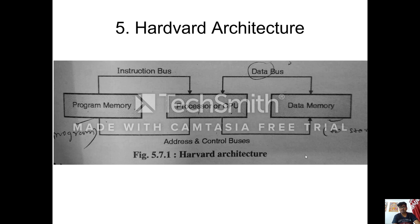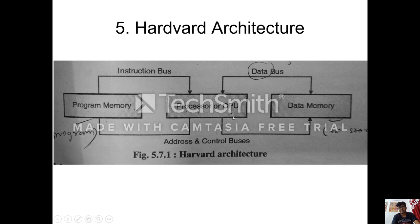Now, how a microcontroller can be designed. There are two architectures for that. One is Harvard architecture and the other is Von Neumann architecture. In Harvard architecture, the program memory and data memory are separate. Program memory stores the instructions and data memory stores the data. Their buses are different — the wires are different for instructions in program memory and for data memory. Therefore, at a time we can fetch both the instruction and the data simultaneously. Hence, a microcontroller designed with Harvard architecture will be a bit faster.